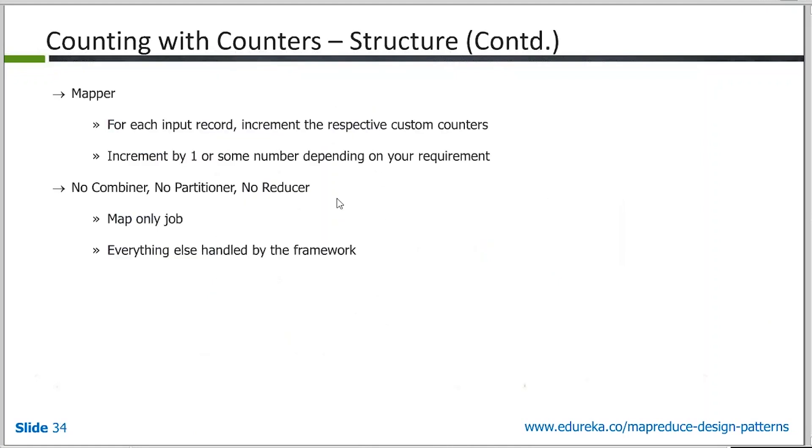This is the structure for counting with the counters. You start with the Mapper here. All the tasks, whichever is to be performed, happens in the Mapper only. There's no reducer here. So incrementing counters A and B over here. A and C over here. Counter D and B over here.